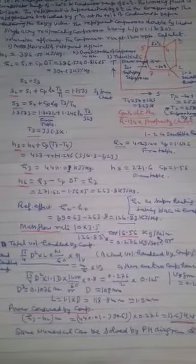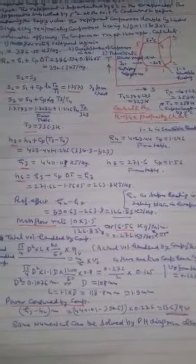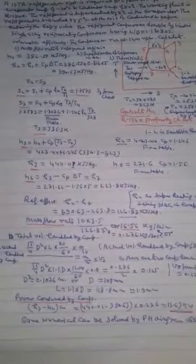Now we need H3, the enthalpy at point 3. H3 = H4 + Cp × (T3 − T4). H4 is the enthalpy of saturated gas at 50°C from the R134A table, H4 = 423.44 kJ/kg. T3 and T4 are known, so H3 can be calculated.